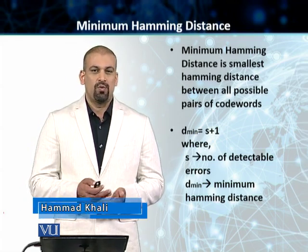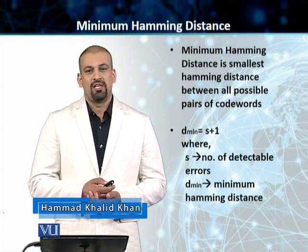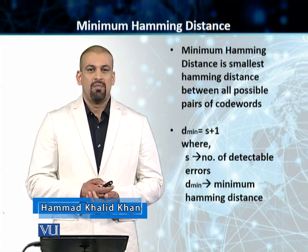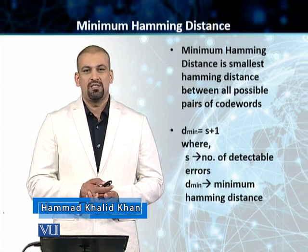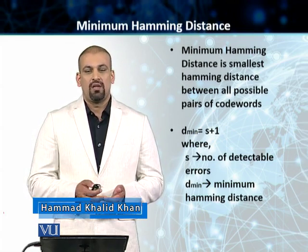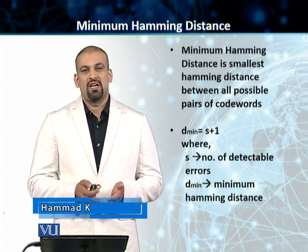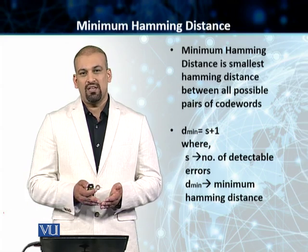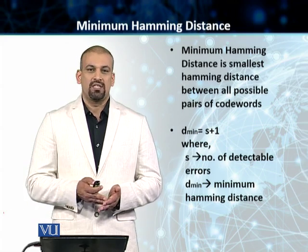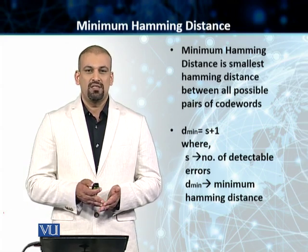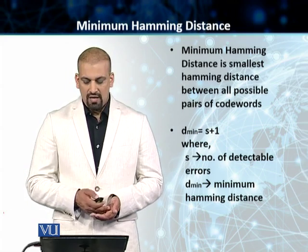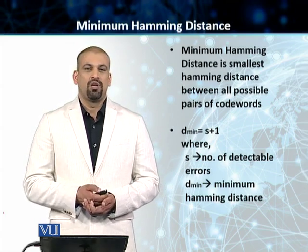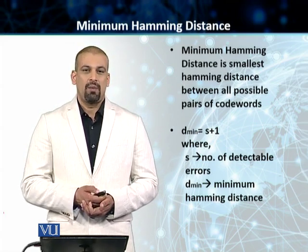So d_min is equal to s plus 1. This is how we find the minimum Hamming distance, where s is the number of errors that we can detect using this minimum Hamming distance, and d_min is the actual minimum Hamming distance.